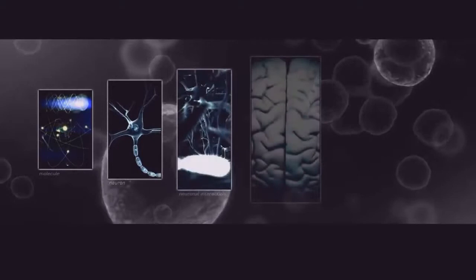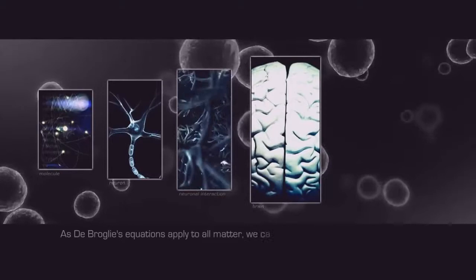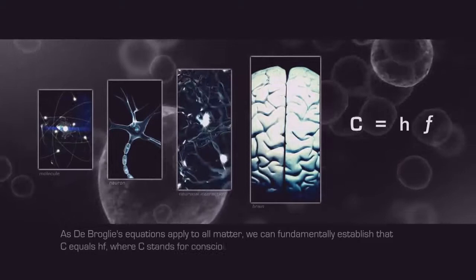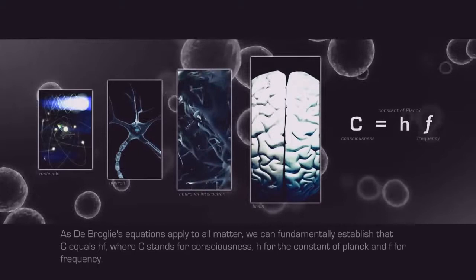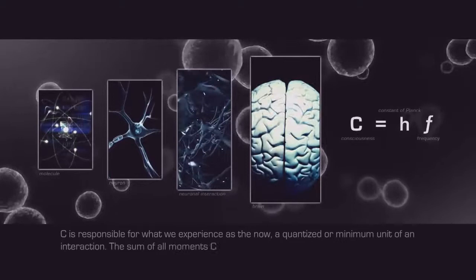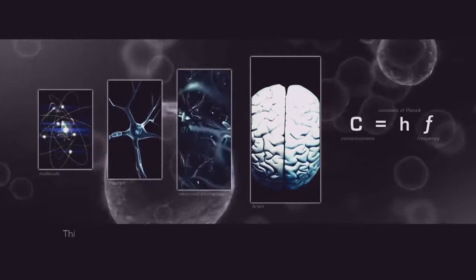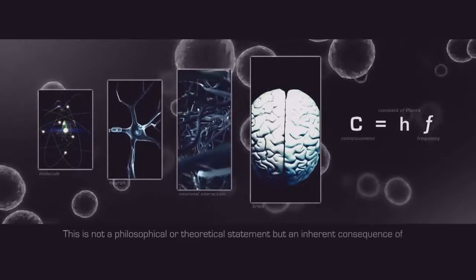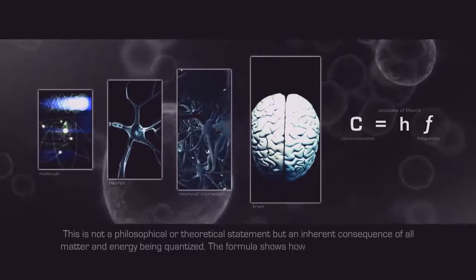As de Broglie's equations apply to all matter, we can fundamentally establish that C equals HF, where C stands for consciousness, H for the constant of Planck, and F for frequency. C is responsible for what we experience as the now, a quantized or minimum unit of an interaction. The sum of all moments C up till the current moment is what shapes our concept of life. This is not a philosophical or theoretical statement, but an inherent consequence of all matter and energy being quantized. The formula shows how life and death are abstract constructions of C.